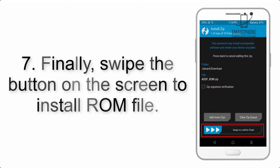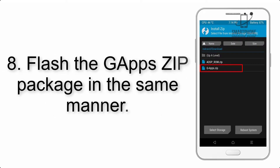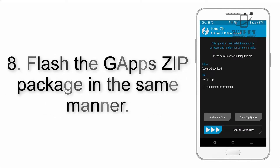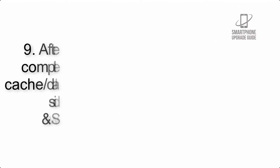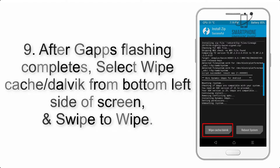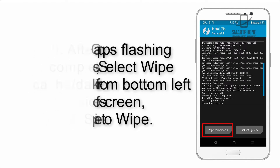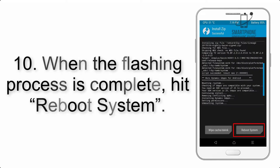Step 7: Swipe the button on the screen to install the ROM file. Step 8: Flash the GApps zip package in the same manner. Step 9: After GApps flashing completes, select Wipe Cache and Dalvik from the bottom left side of the screen and swipe to wipe.